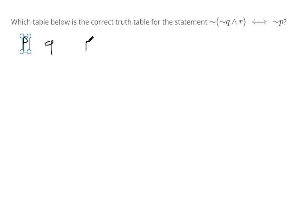So we have three statements, P, Q, and R, and we need to make the standard truth values for each of them.